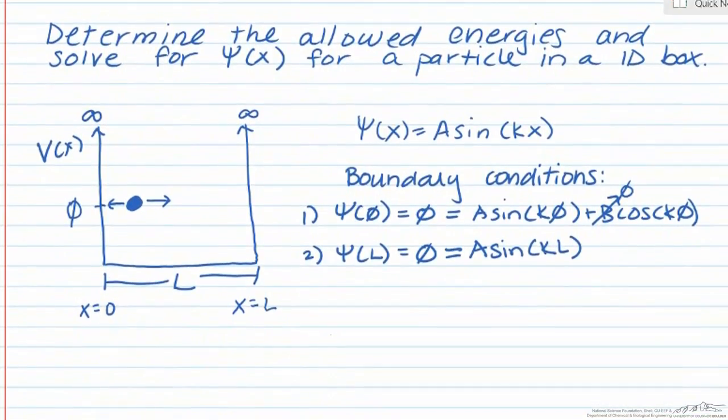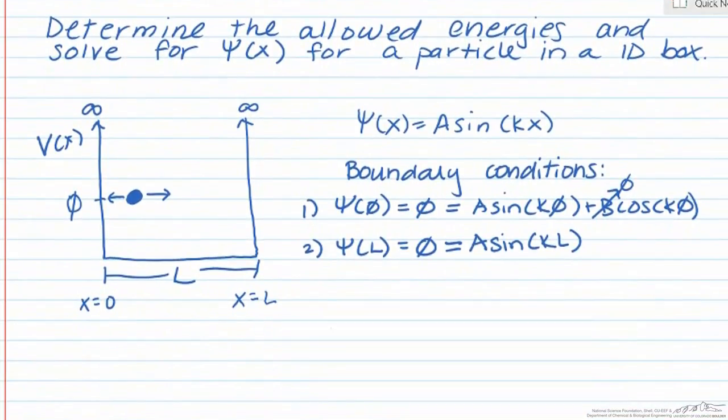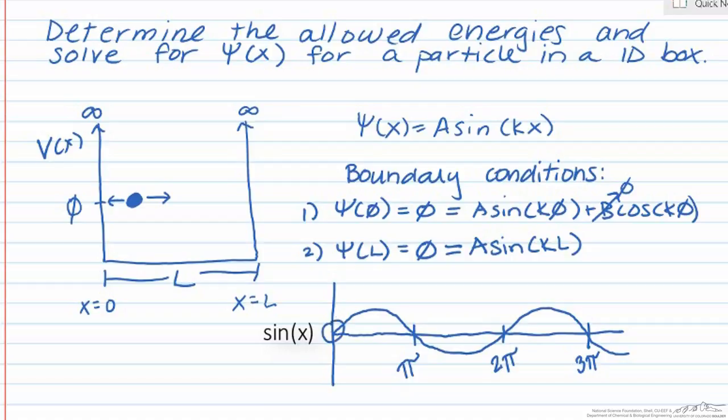So where does a sine function equal 0? Sine equals 0 at integer values of pi. So that means that kL has to be equal to integer values of pi in order for our overall expression to be equal to 0. Let's call that integer n. KL then equals n pi, and if we solve for k, we find that k equals n pi over L.